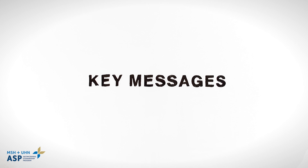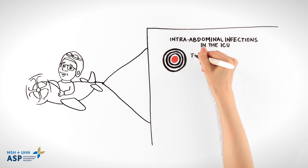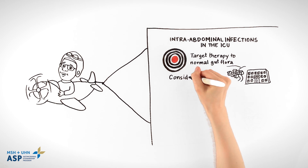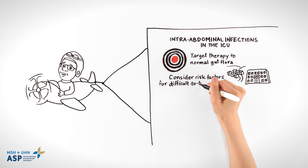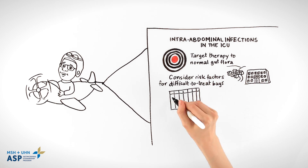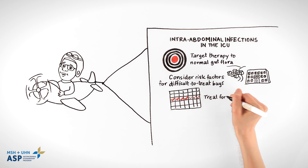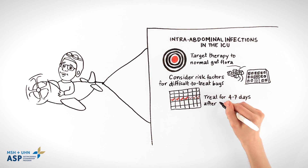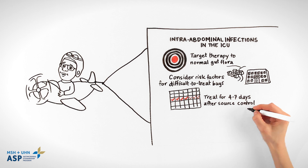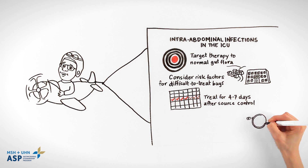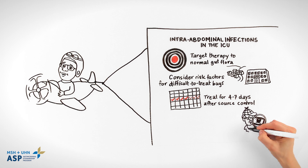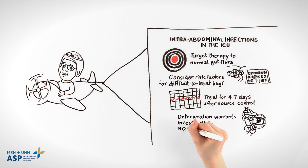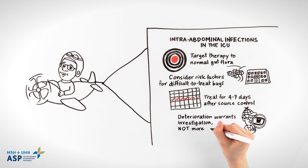Key messages: Target therapy to normal gut flora and consider risk factors for problem bugs. Duration of therapy is typically four to seven days after achieving source control. Clinical deterioration warrants further investigation rather than more antibiotics.